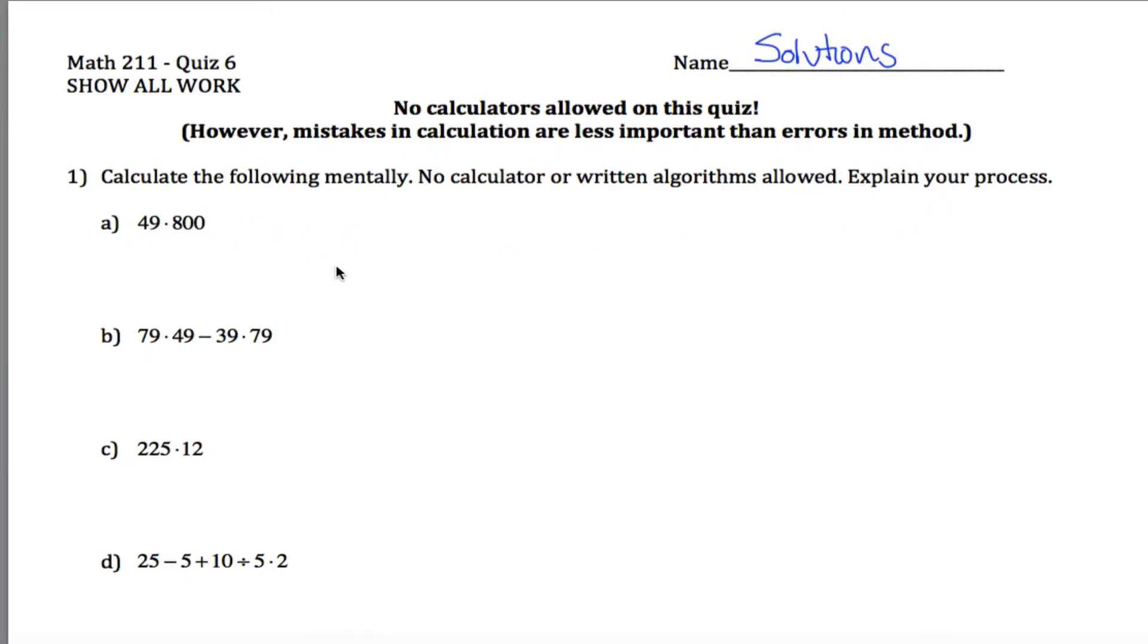So the idea here is 49 times 800 is hard to do, but 50 times 800 isn't as bad because 5 times 8 is 40, so 50 times 800 would be that 40 with three more zeros tacked on, in other words, 40,000. That's not what it's asking. It's asking for 49 times 800. Well, 49 times 800 is one less group of 800. So I have this 40,000 and then I have to get rid of 800. So instead of 40,000, I have 39,200. And where that comes from is 50 times 800 is equal to 40,000 and 40,000 minus 800 is equal to 39,200.